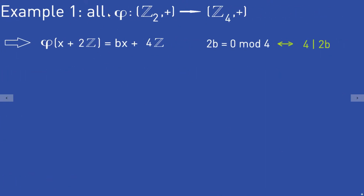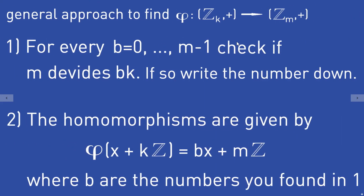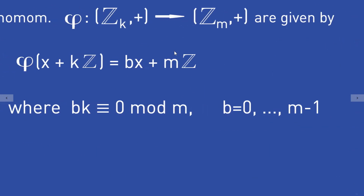The first example: we want to find all group homomorphisms from Z_2 to Z_4. We already know these homomorphisms must look like phi of (x + 2Z) = B times x + 4Z, where B must fulfill the condition that 2 times B is equal to 0 modulo 4, which means 4 must divide 2 times B.